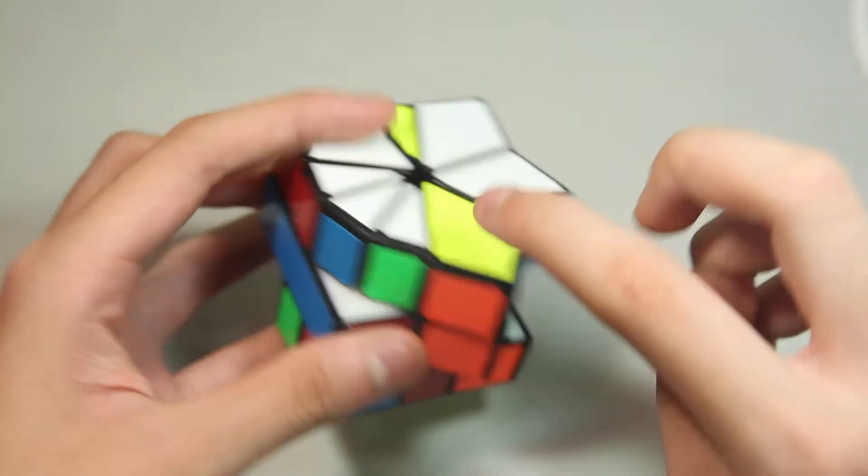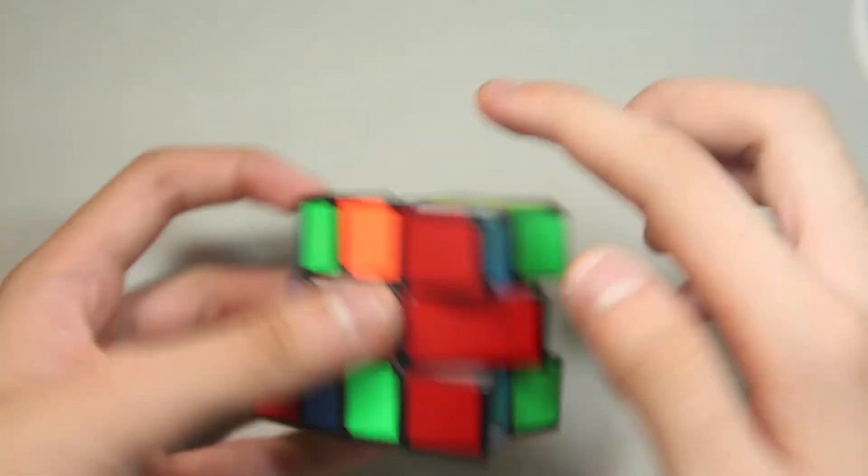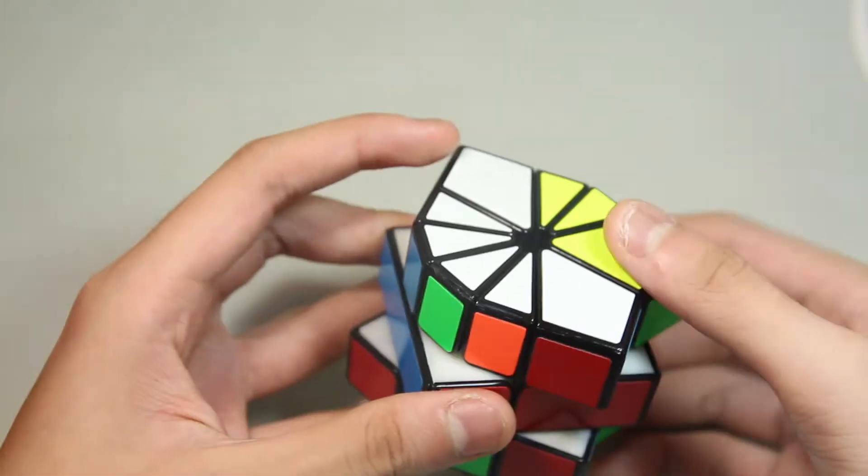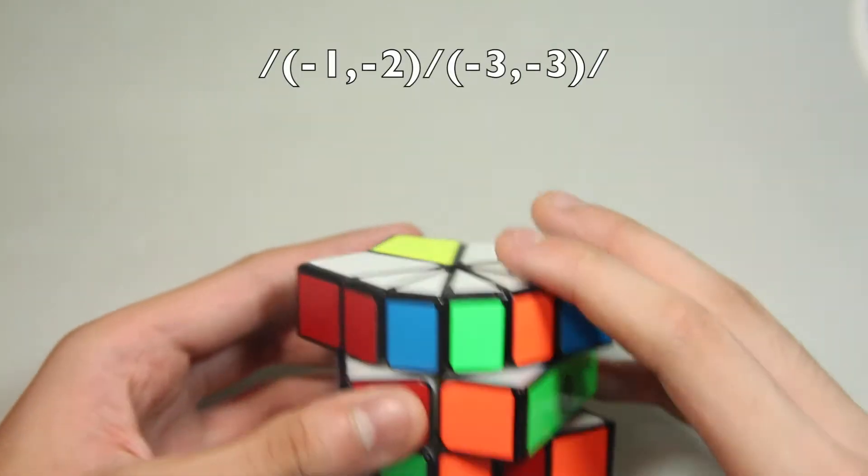Then you see this line, you can bring it up. Now we can connect these two edges and we have scallop-scallop. Here's the algorithm.